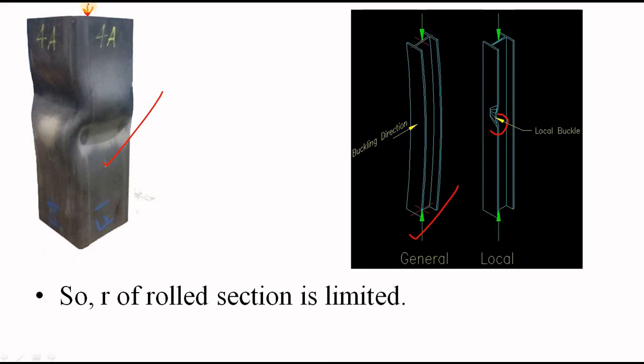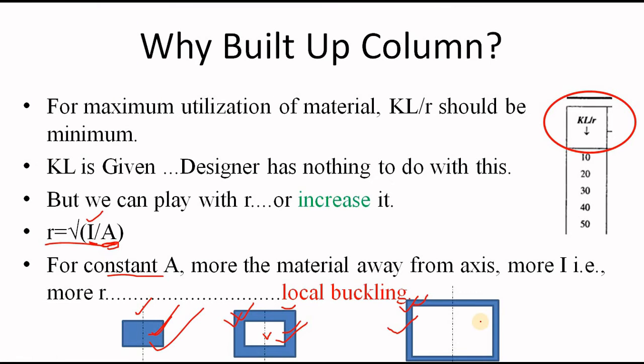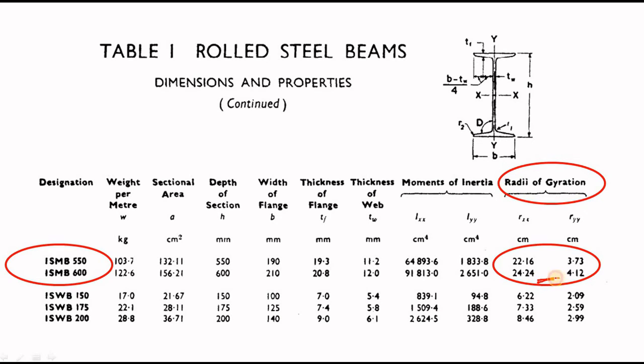Here you can see, the compressive loads were applied like this, from top and from the bottom. Instead of buckling generally or in this form, it has buckled locally. Why? Because the thickness of the element has been reduced too much to increase the value of our radius of gyration. That's why the rolled sections are produced with limited value of radius of gyration. And the basis of this limitation is local buckling.